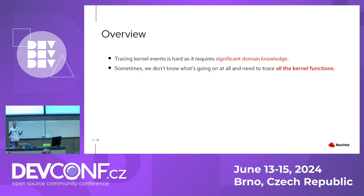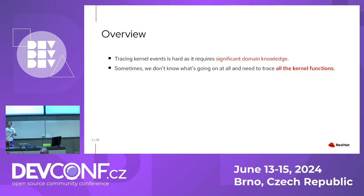Sometimes you have no clue about what's going on in the kernel, especially if you're not a kernel expert. One idea or solution to that would be: let's attach to all the functions in the kernel and see which functions are executed. Ideally let's get more data — how long the functions are running, the order of the functions, which function is calling which, etc. This is the goal of my talk — to see what the current state-of-the-art enables us to do.